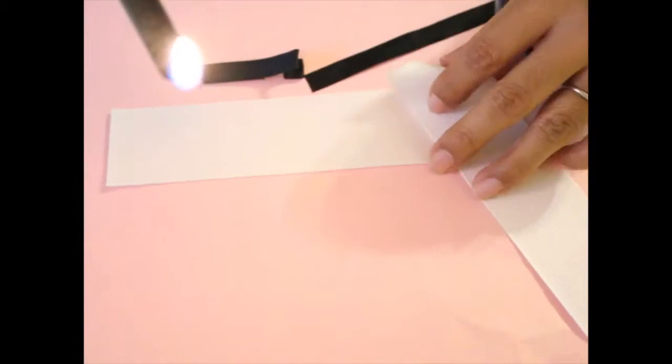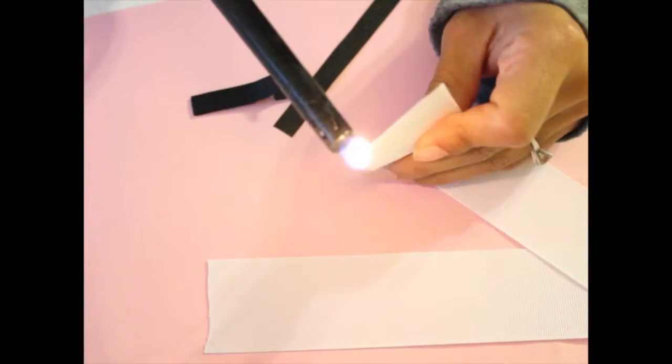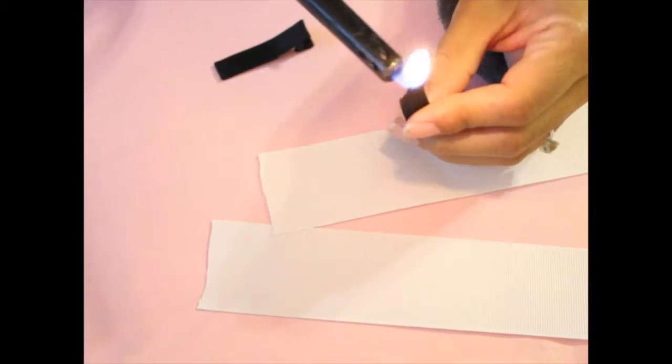So first I'm going to use my lighter and I'm going to singe the ends to prevent any fraying from the ends. I think it's really important because with time if you don't do this the whole thing will just kind of fall apart.